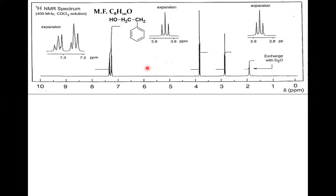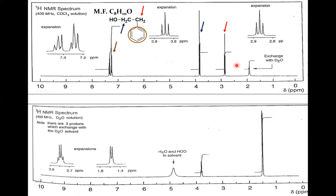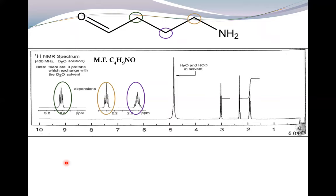This is a benzene ring with CH2 and another CH2, where deshielding occurs due to oxygen. Looking at another structure, if you see a broad peak, immediately say it is a functional group. You can prove it with D2O exchange. You can also see a doublet and a quartet, allowing you to identify the structure as a methyl group attached to a CH bonded to a carbonyl.